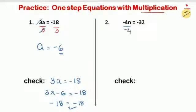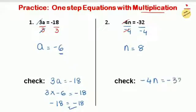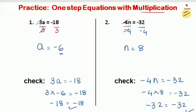For the second multiplication question, we divide by negative 4 on both sides, leaving n equals 32 divided by 4, which is 8. So n equals positive 8. To verify: write negative 4n equals negative 32 and substitute n with 8 — negative 4 times 8 equals negative 32. Negative times positive is negative, so both sides equal negative 32. The solution n equals 8 is correct.